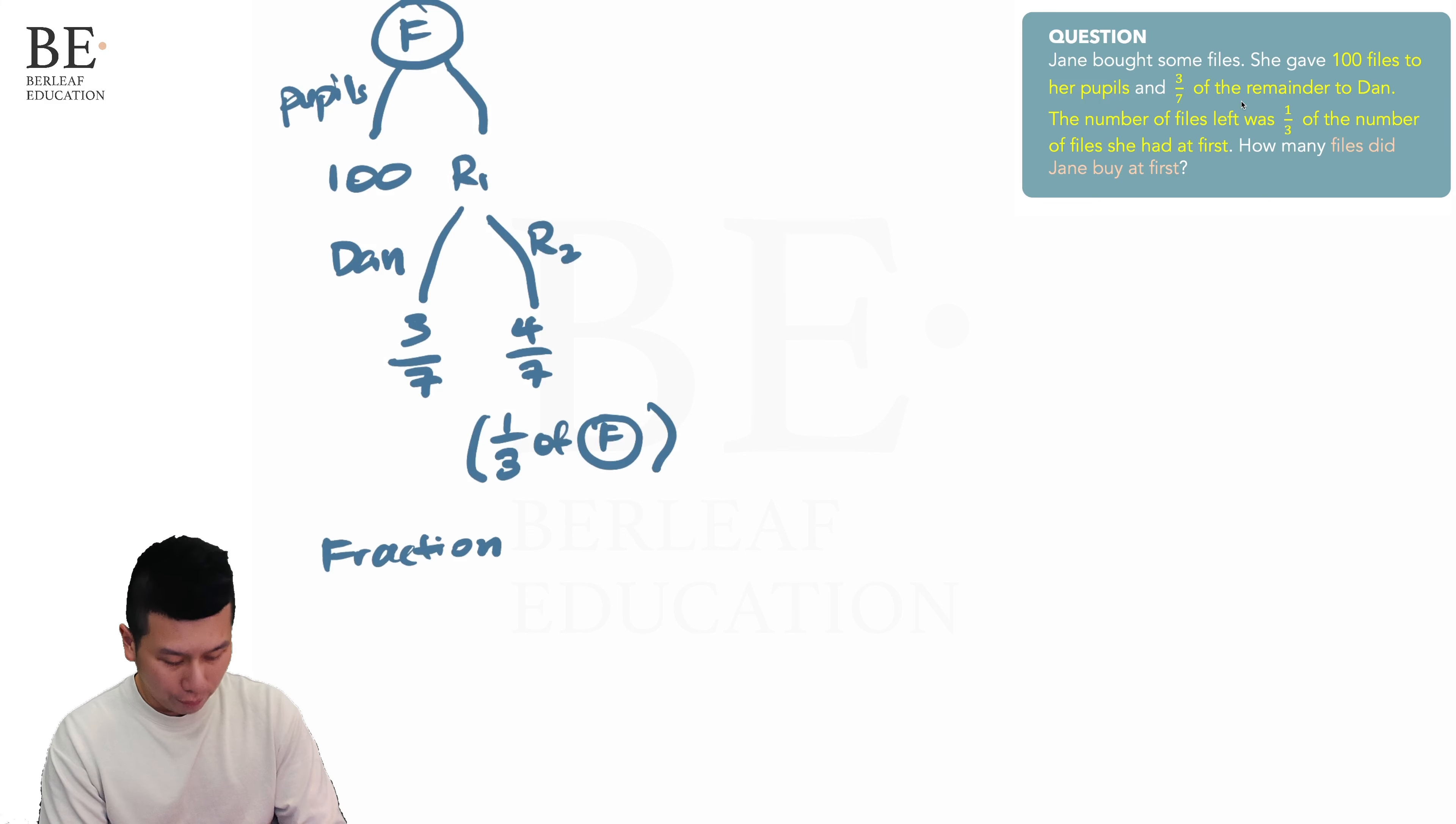By using one-third divided by 4 over 7, keep, change, flip gives us—there's no simplification required—giving us 7 over 12.